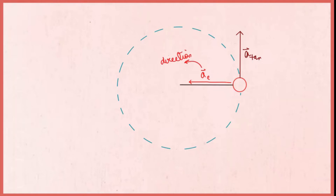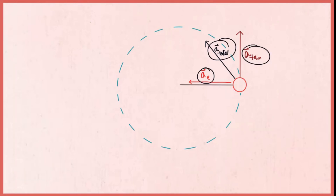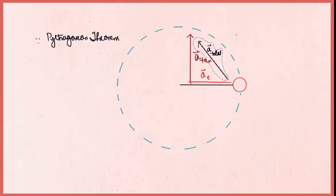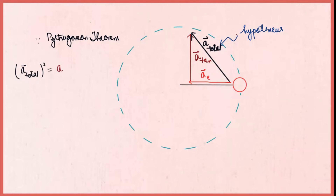As these two accelerations are not directed in the same direction, the total acceleration would be somewhere in between. This total acceleration can be found using Pythagoras theorem. Tracing the tangential acceleration to form a right-angle triangle, the hypotenuse gives the total acceleration: total acceleration squared equals tangential acceleration squared plus centripetal acceleration squared.